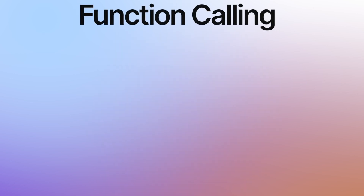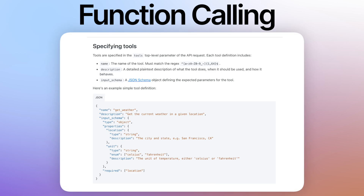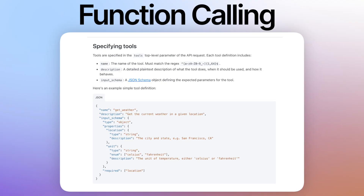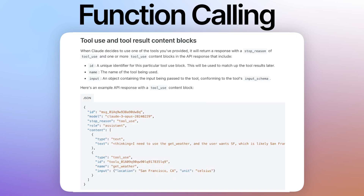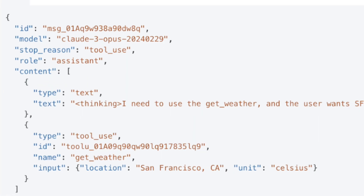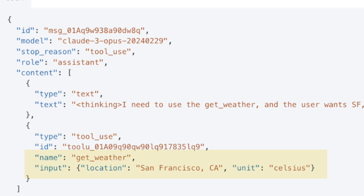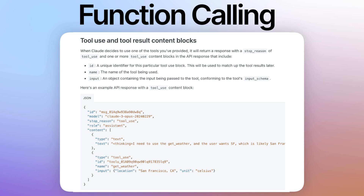The first is function calling. In function calling, we supply a certain schema to the vendor specifying all of the functions that we want to equip our agent with. After that, our LLM is sort of equipped with those tools. The LLM may respond to us in its response that we need to invoke a tool with certain arguments, according to the specification we sent it. We're not exposed to the logic that happens under the hood for how the LLM is determining how to select the tool.